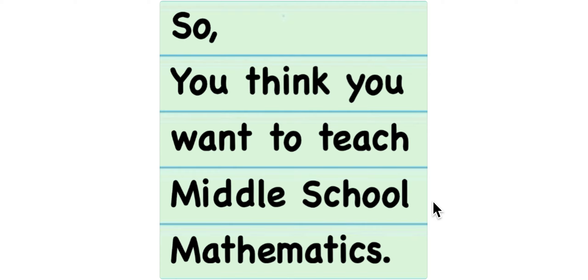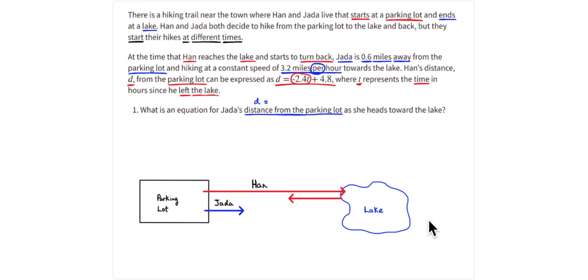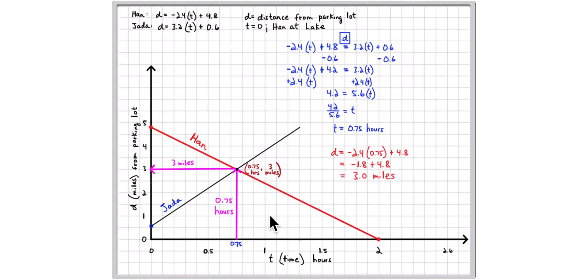So you think you want to teach middle school mathematics. Well this is an example of some of the decisions that you will have to make. This is Unit 4, Lesson 12, Activity 2: Passing on the Trail. In this problem you have Han walking from the lake to the parking lot and Jada walking from the parking lot towards the lake, and they're going to pass or meet at some time. So you need to figure out what time that is and what distance that is from the parking lot.